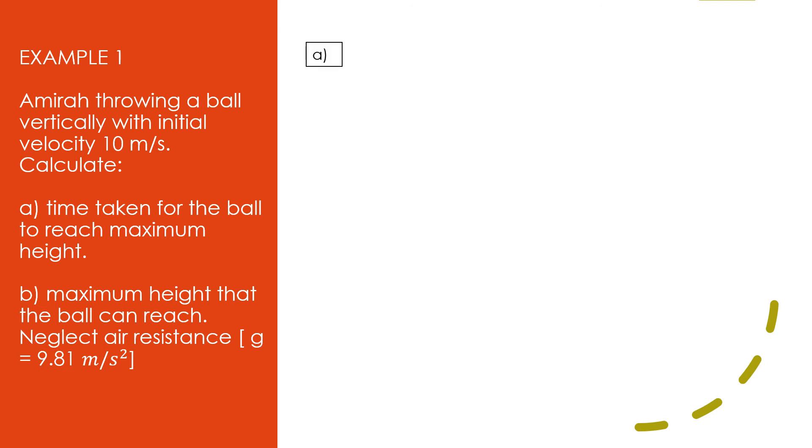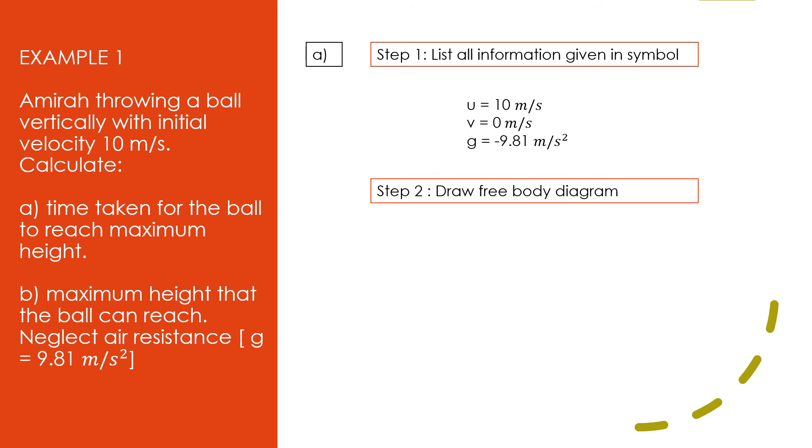For part A, the first step is: list all information given in symbols. So, from the information we get, we will write the list like this. We know that u = 10 m/s. v, the final velocity, is zero because eventually the ball will stop for a few seconds before it falls down. And don't forget our gravitational acceleration. Step 2, draw the free body diagram. Our free body diagram will look like this. The arrow is upright because Amira is throwing the ball. Putting all information that we have listed in the free body diagram will help us to imagine the problem.